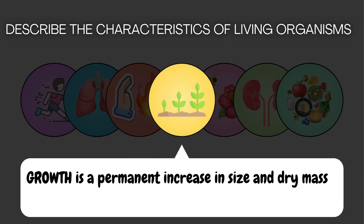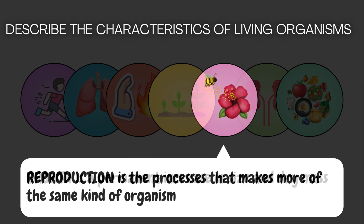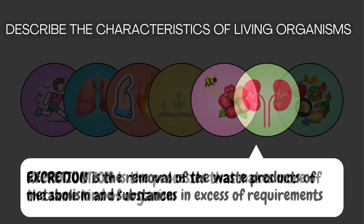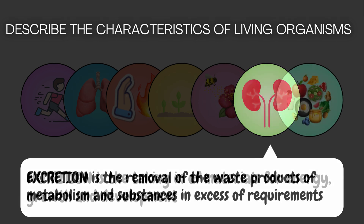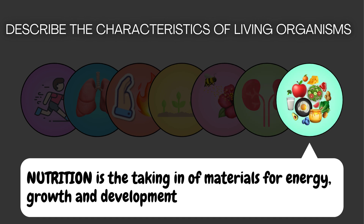Sensitivity is the ability to detect and respond to changes in the internal or external environment. Growth is a permanent increase in size and dry mass. Reproduction is the process that makes more of the same kind of organism. Excretion is the removal of the waste products of metabolism and substances in excess of requirements. Nutrition is the taking in of materials for energy, growth, and development.